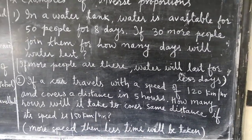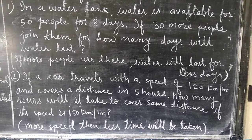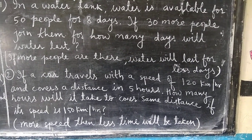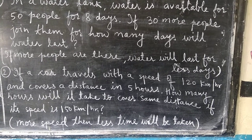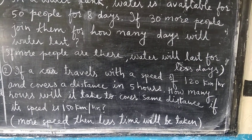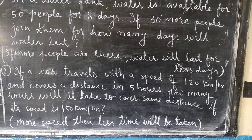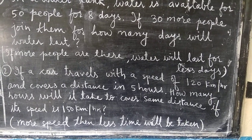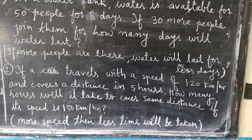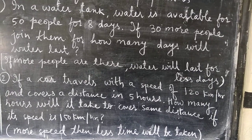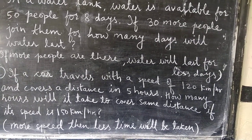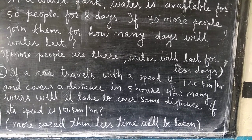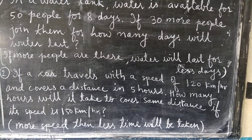The second example: if a car travels at a speed of 120 km per hour and covers a distance in 5 hours, how many hours will it take to cover the same distance at 150 km per hour? It is obvious that if the speed is 120 the time taken is 5 hours, and if the speed is increased, the time will be less.